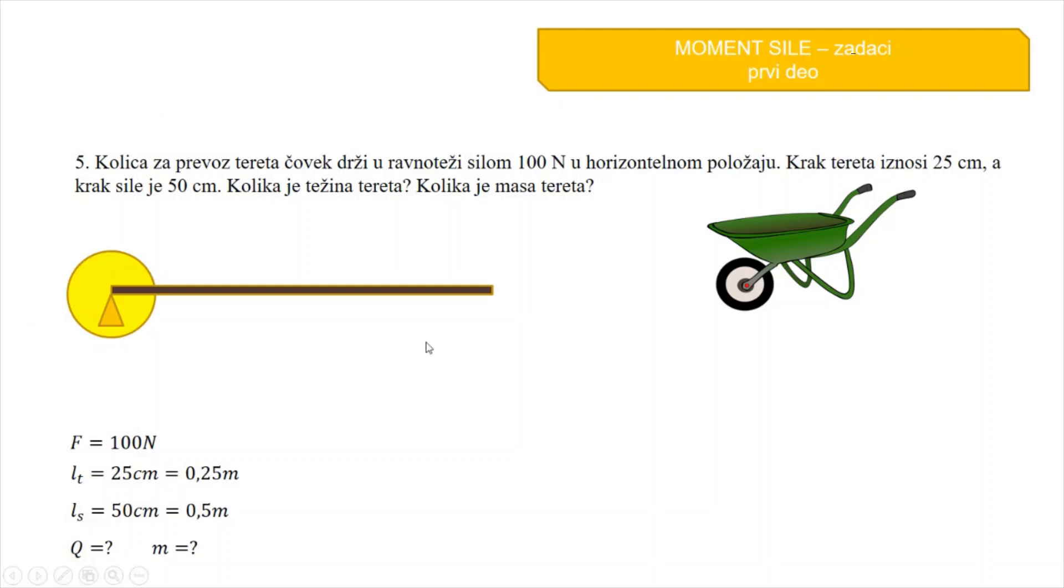Ovaj krug žuti, to je ovaj točak ovde i tu se nalazi oslonac. Ovo su dalje kolica. Ovdje je teret, to je ono što ubacujemo ovde u kolica i to je udaljeno od tačke oslonca L tereta 25 cm. Na drugom kraju ove jednostrane poluge, to je ovde gdje su ove ručke,